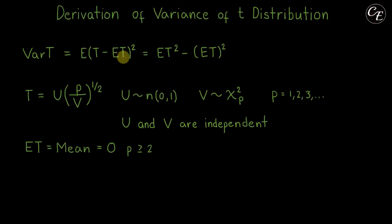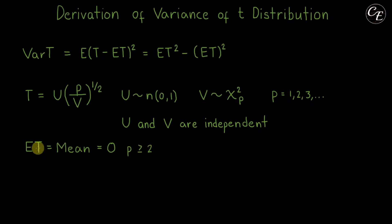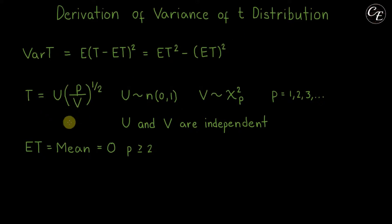Now, the expectation of t is the mean for this t-distribution, and it is equal to 0 as long as p is greater than or equal to 2. If you want the proof that the mean of this t-distribution is 0 and the proof for the expression of the t-random variable, you can find them on the links provided in the description below.